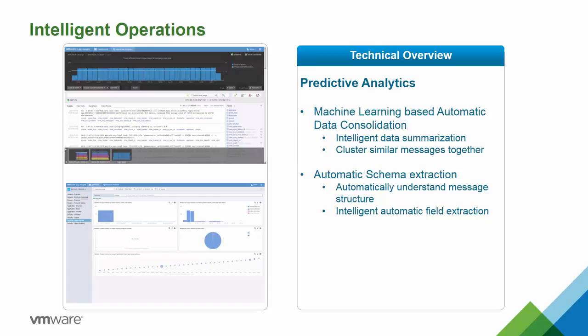Log Insight addresses intelligent operations by providing proactive analysis and machine learning. Automatic log consolidation groups similar messages together with no runtime overhead — for example, if you have 1,000 messages that match a query, it reports back that there are only five message types within those 1,000 messages, reducing and consolidating them for easier troubleshooting. It also has automatic schema discovery, which understands the message structure of incoming log files, and automatic field extraction, which discovers fields and their data types automatically.